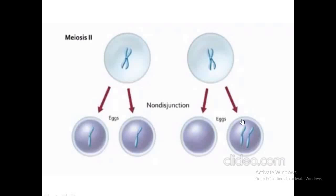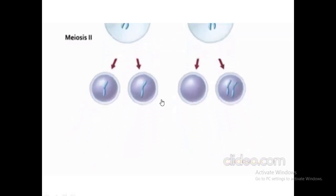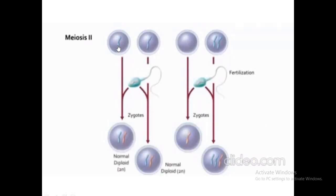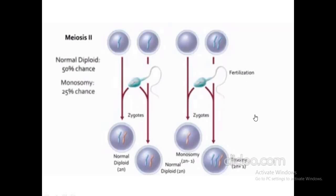One cell will contain an extra copy of chromosome. When these cells undergo fertilization with sperm cells, the normal cells produce normal diploid zygotes. The cell lacking a chromosome fuses with sperm and leads to monosomy, while the cell with an extra chromosome leads to trisomy. So in Meiosis I non-disjunction we get two trisomy and two monosomy cells, whereas in Meiosis II we get two normal diploid cells, one monosomy, and one trisomy.